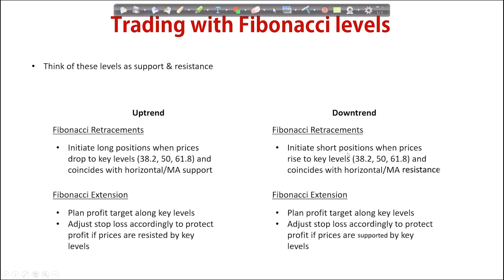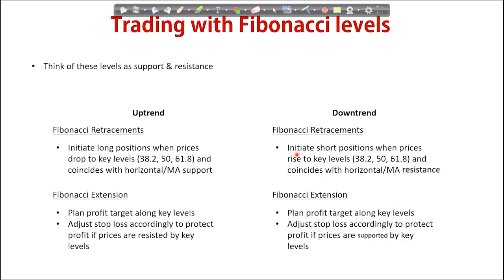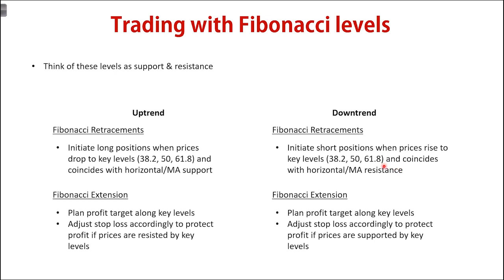And likewise on the downside, you can initiate short positions when prices rise to key levels — the 38.2%, 50%, and 61.8% levels. It is best that the key Fibonacci retracement level coincides with a horizontal or moving average resistance to signify that further upside is limited, so that you can short the stock. You can then use the Fibonacci extension levels to plan your profit targets and also to adjust your stop loss or profit target accordingly to protect your profit if prices are supported by key Fibonacci extension levels.